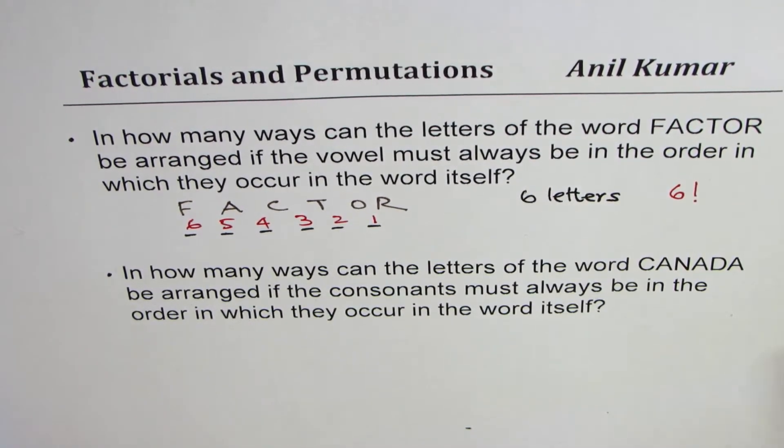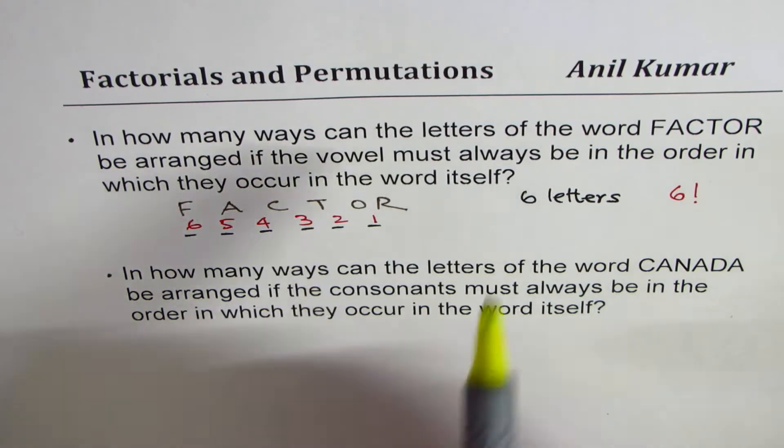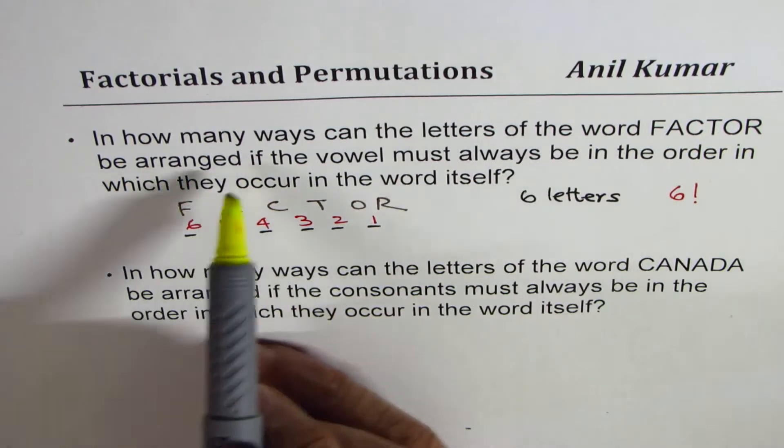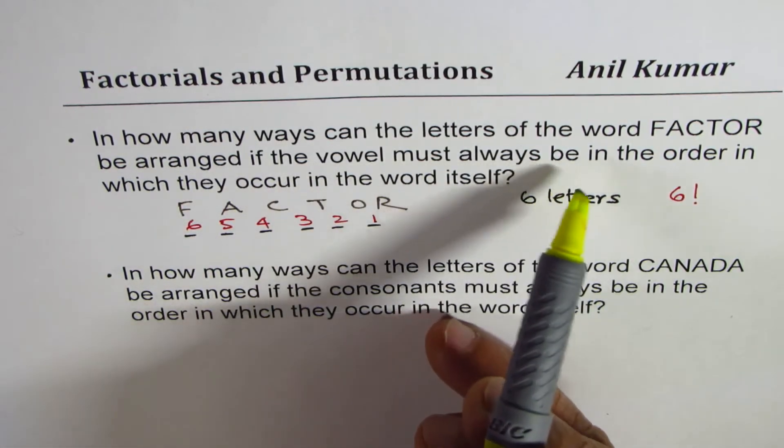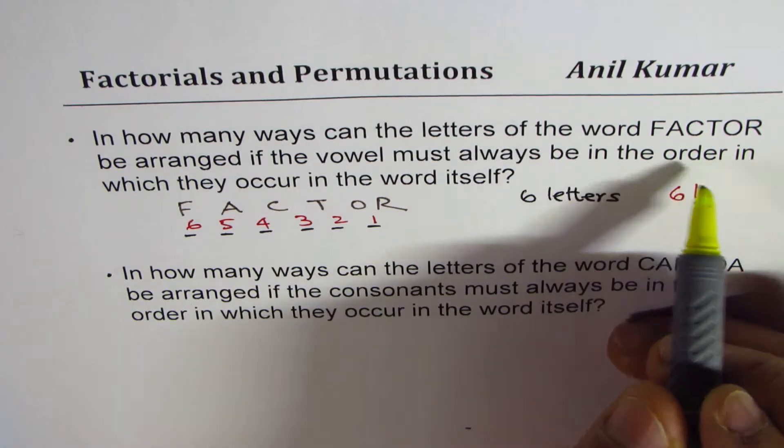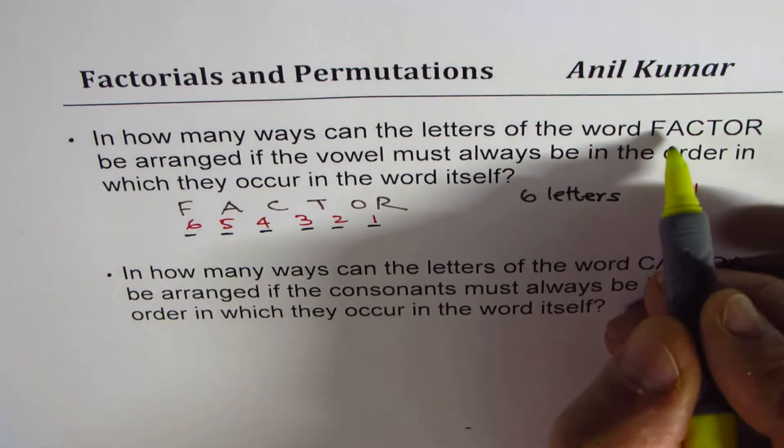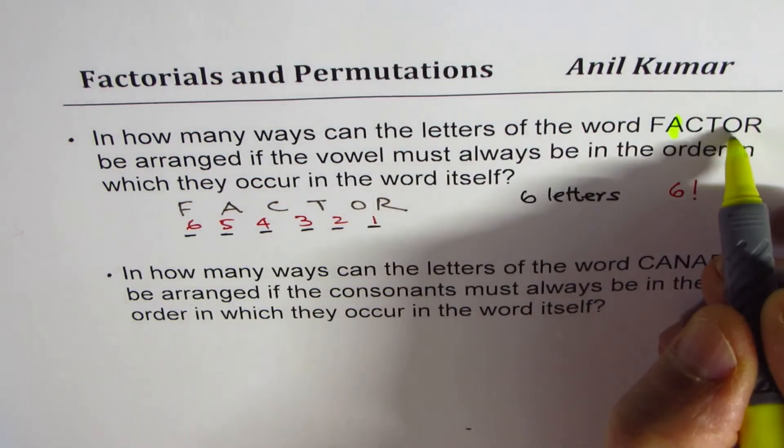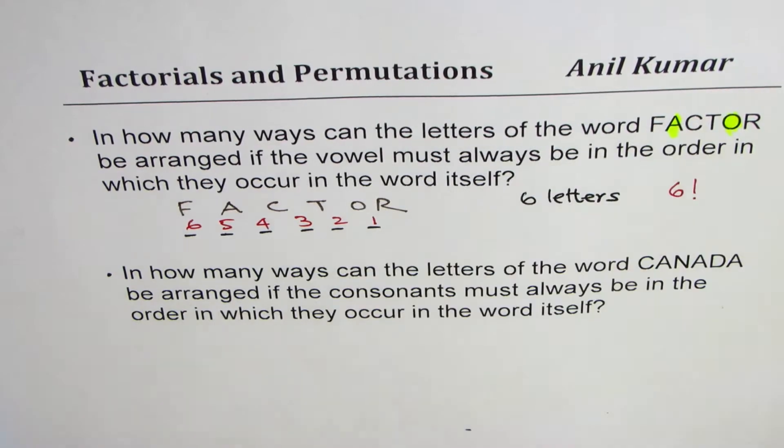Now the restriction which is given to us is, in how many ways can the letters of this word be arranged if vowels must always be in the order in which they occur? Vowels are A and O in this. So these are the 2 vowels.